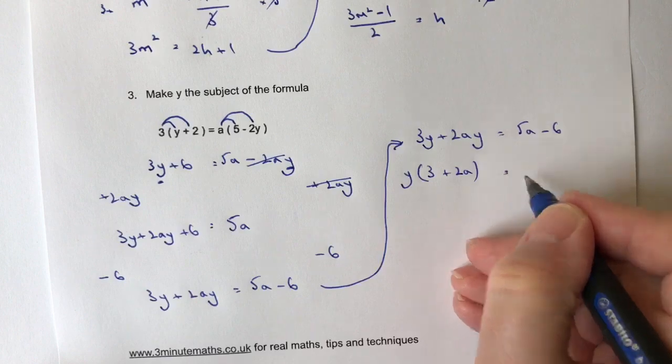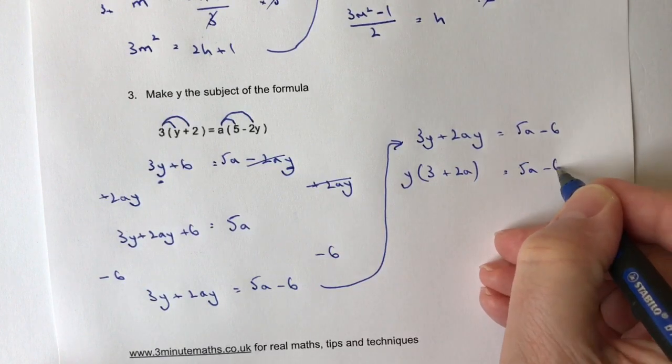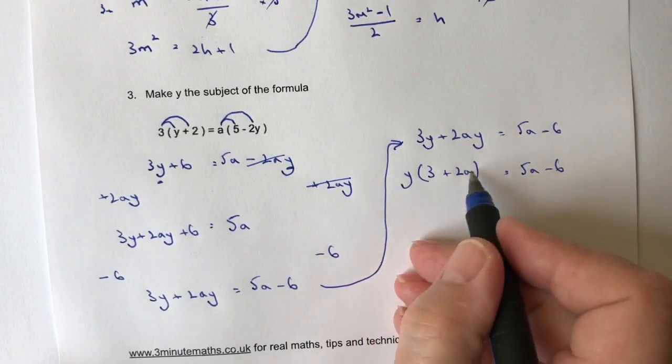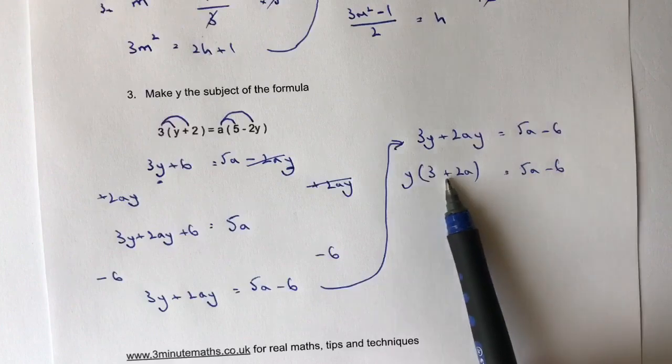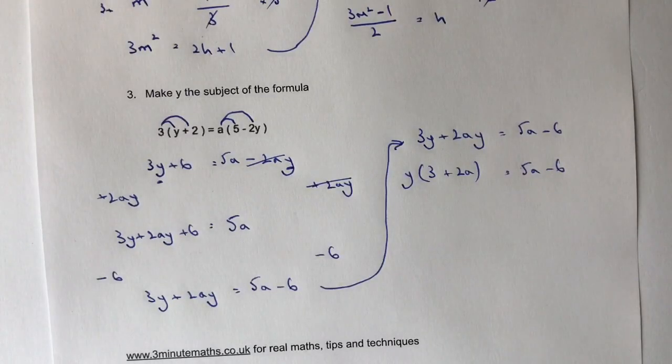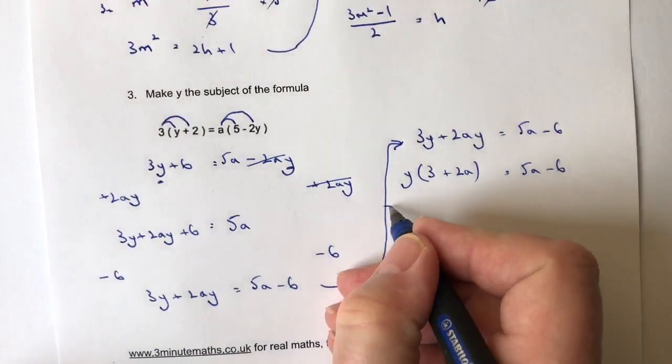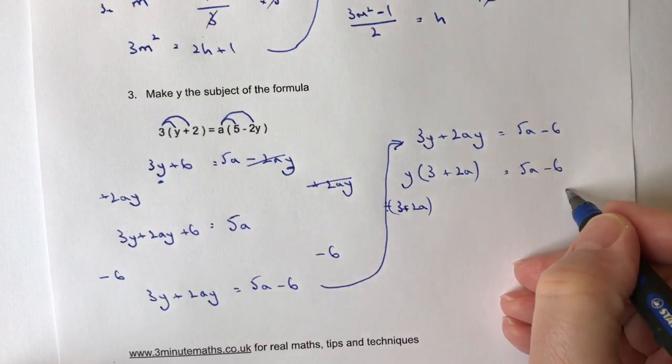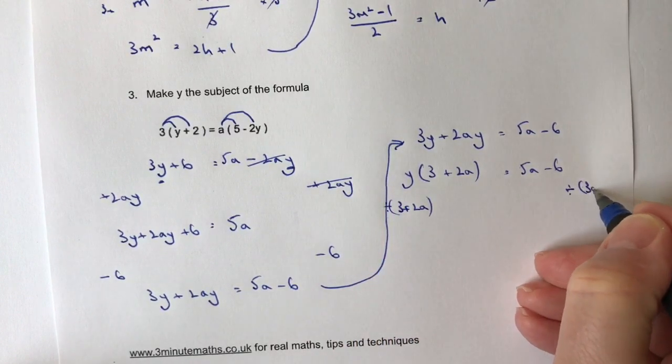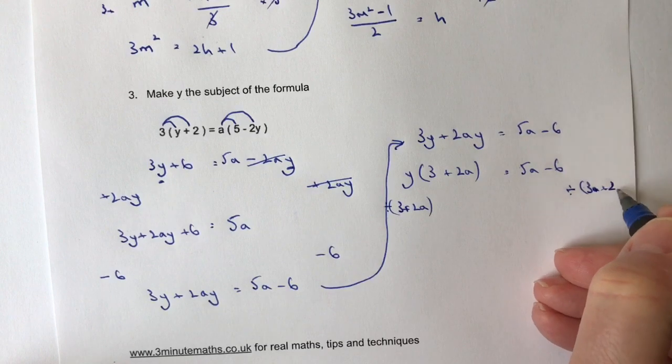Because if I do that, it means I've separated out the Y term from the multiplication that needs to take place in order to make 3Y and minus 2AY. But because these two are multiplied together, I can then divide by 3 plus 2A. If I divide both sides by 3 plus 2A.